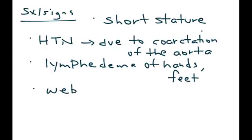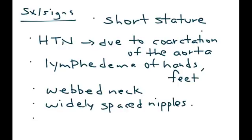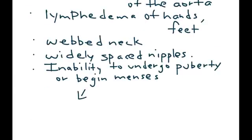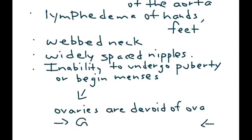Webbed neck is a classic feature in Turner Syndrome. Widely spaced nipples. And an inability to undergo puberty or begin menses. This happens because the ovaries are devoid of ova — they don't have the ova that are needed. This is known as gonadal dysgenesis.